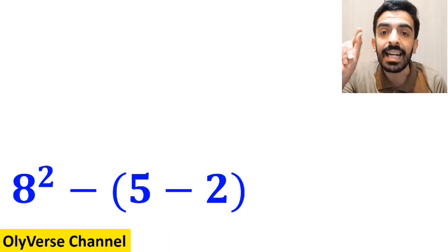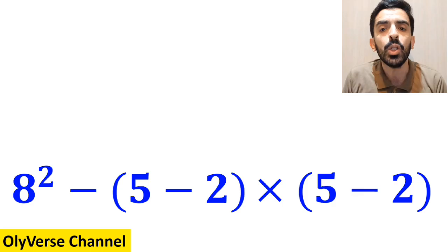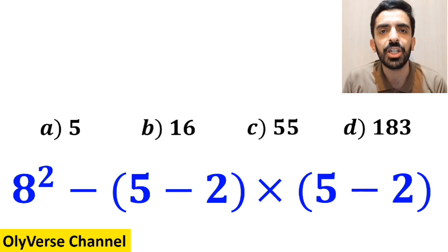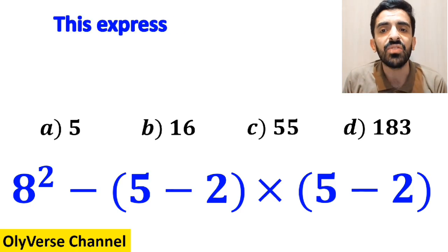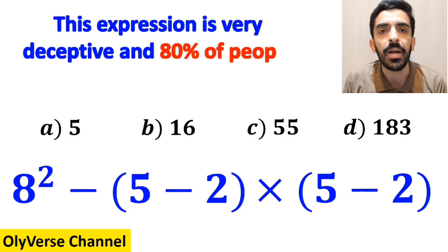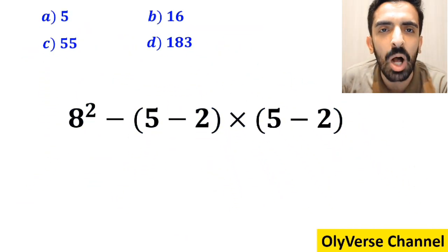What is the value of the expression 8 squared minus 5 minus 2 inside the parenthesis, then multiply by 5 minus 2 inside the parenthesis again? Which option do you think is the correct answer to this question? This question is very deceptive and 80% of people get the wrong answer. Let's go through the steps and solve it together.